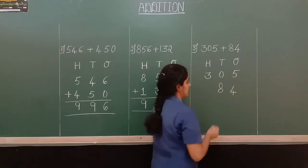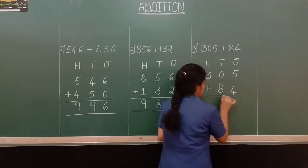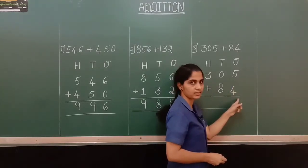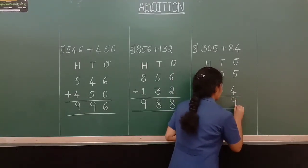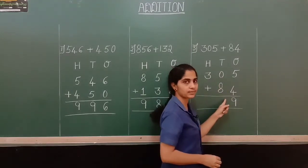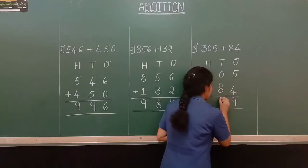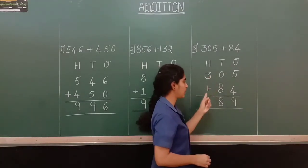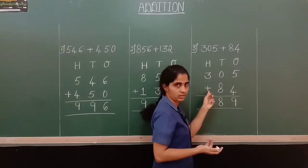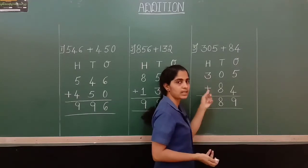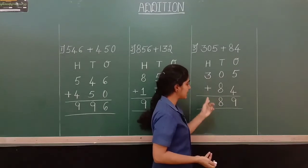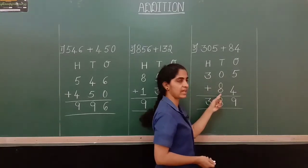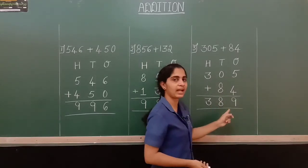Let us put the plus symbol. When we add the numbers, 5 plus 4 is 9. Now 0 plus 8 is 8. Here we have 3 and there is no number, so we can consider it as 0. 3 plus 0 is equal to 3, or we write the same number 3. So the sum of 305 plus 84 is 389.